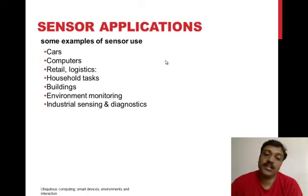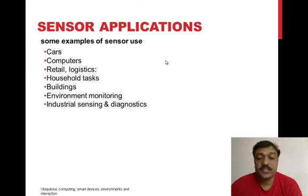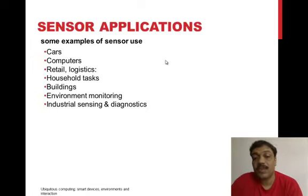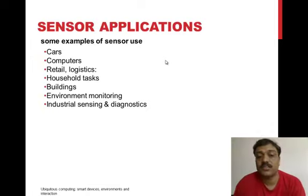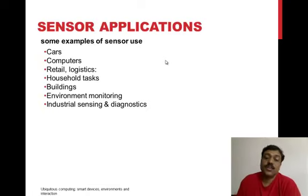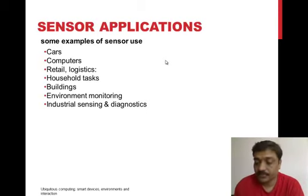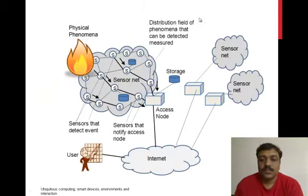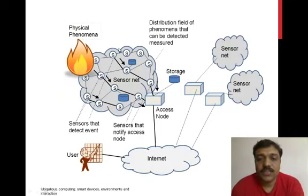There are also industrial sensing and diagnostic applications, as discussed with the chemical plant example, where smoke sensors, gas sensors, and temperature sensors can be used for different purposes. Essentially, your whole environment is loaded with different types of sensors.